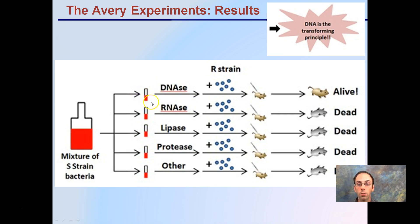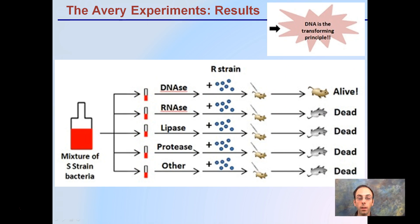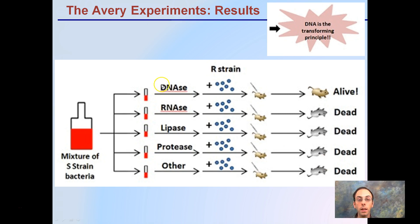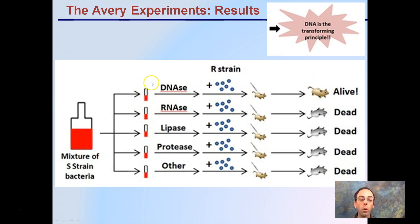When these were added to different test tubes and then mixed with the R-strain, tests were conducted. In all cases the mouse sadly ended up dying — except when DNase was added to break down the DNA. When that mixture was combined with the R-strain, the mouse was alive, because the DNase broke down the DNA and removed the virulence of the S-strain.